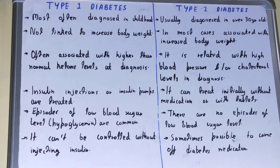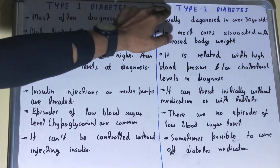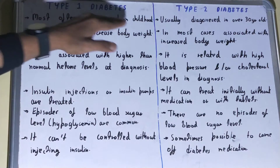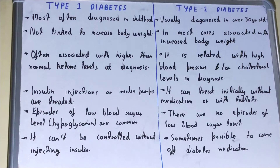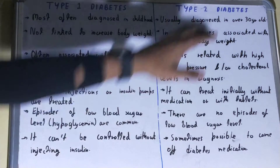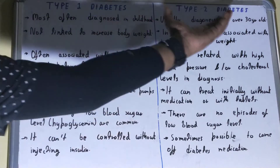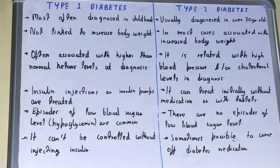Hello friends. In this video I will be helping with the difference between Type 1 diabetes and Type 2 diabetes. Type 1 diabetes is generally diagnosed during childhood, but if you talk about Type 2 diabetes, it is usually diagnosed in people over 30 years old.